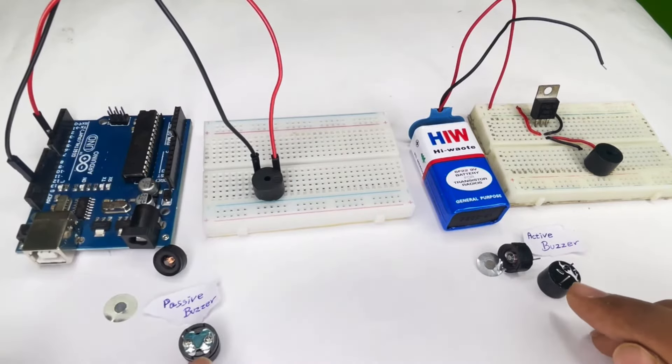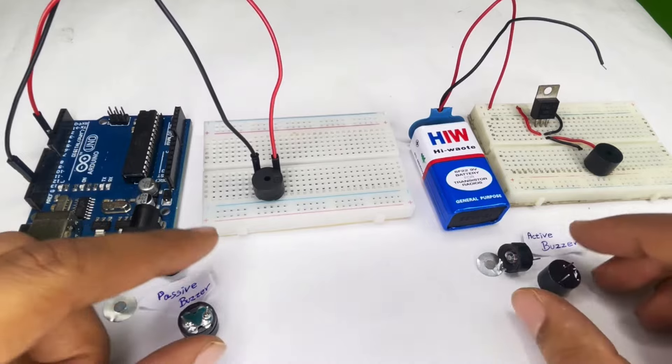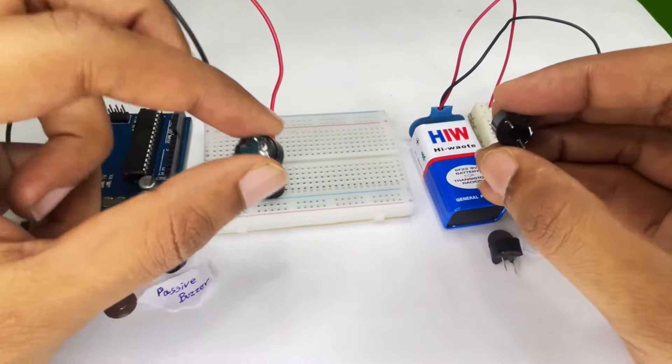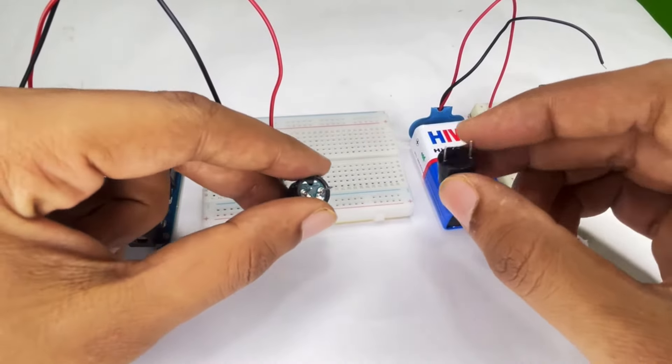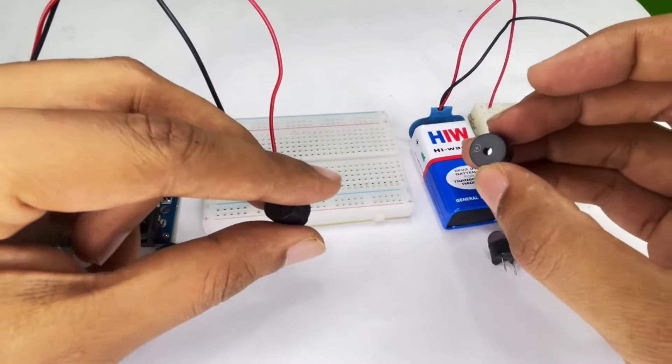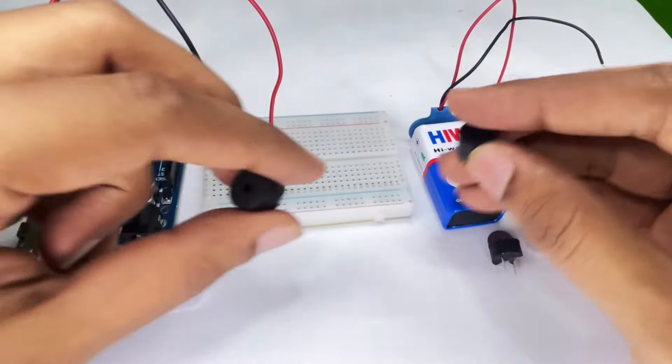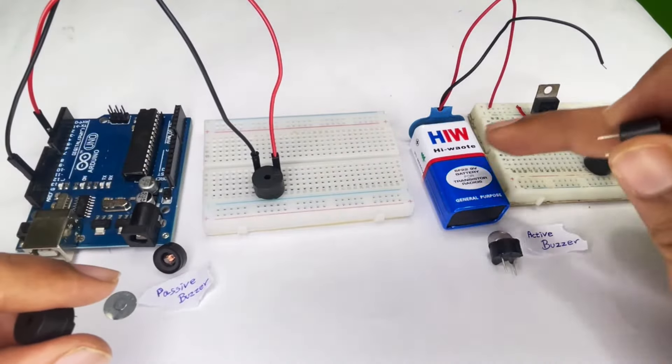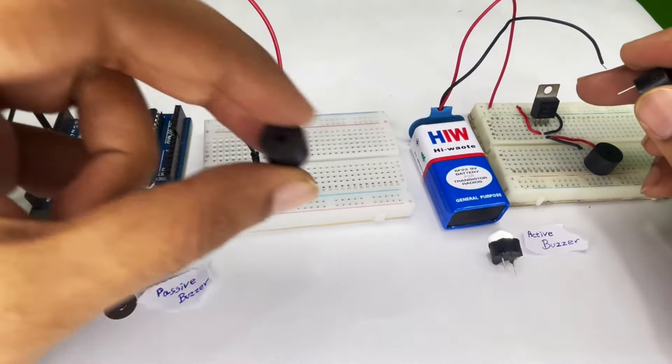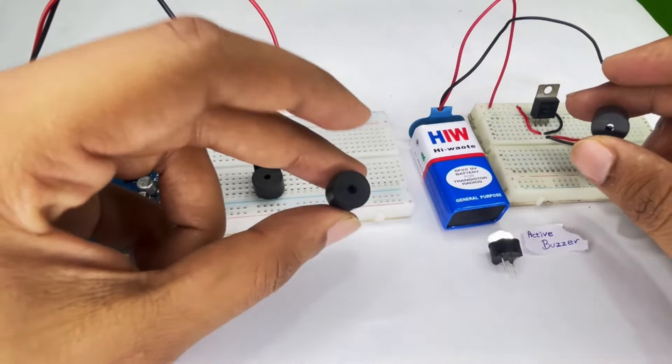The main difference between an active buzzer and a passive buzzer is that the active buzzer has a crystal built into it. So if you directly power it with a 9 volt battery it will make a sound, but the passive buzzer will not do so.